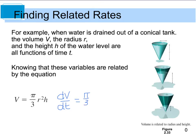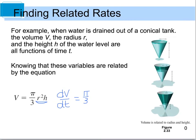Then I have a product rule right here. So, I'm going to apply the product rule to that. I have the first, which is r squared, times the derivative of h, which is going to be dh/dt, plus the second, which is h, times the derivative of r, which gives us 2r dr/dt.